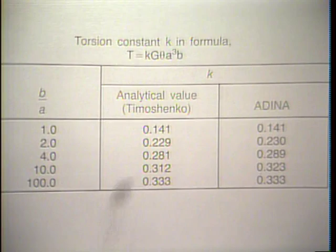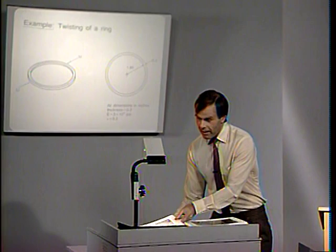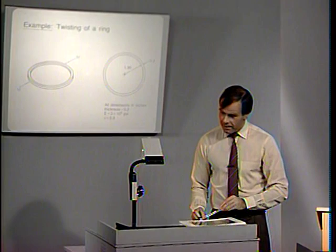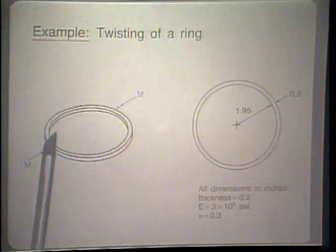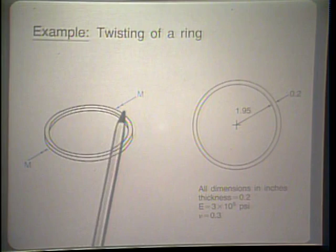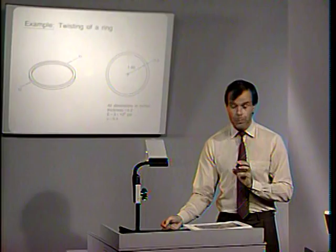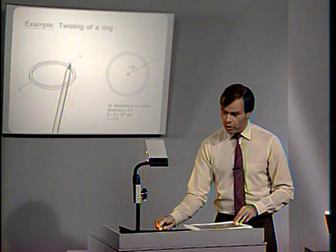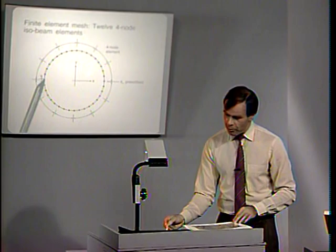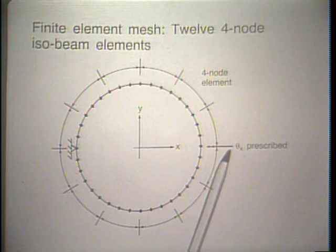Let's look at an example: a narrow ring. Here you have a plan view of that ring with dimensions given, and Young's modulus and Poisson ratio given for that ring, subjected to bending moments. The twisting capability of the beam must be properly modeled under this loading condition. The model used to analyze the problem shows that on one side of the ring we have fixed it, and at the other side we prescribe a rotation theta x, using four-node elements.